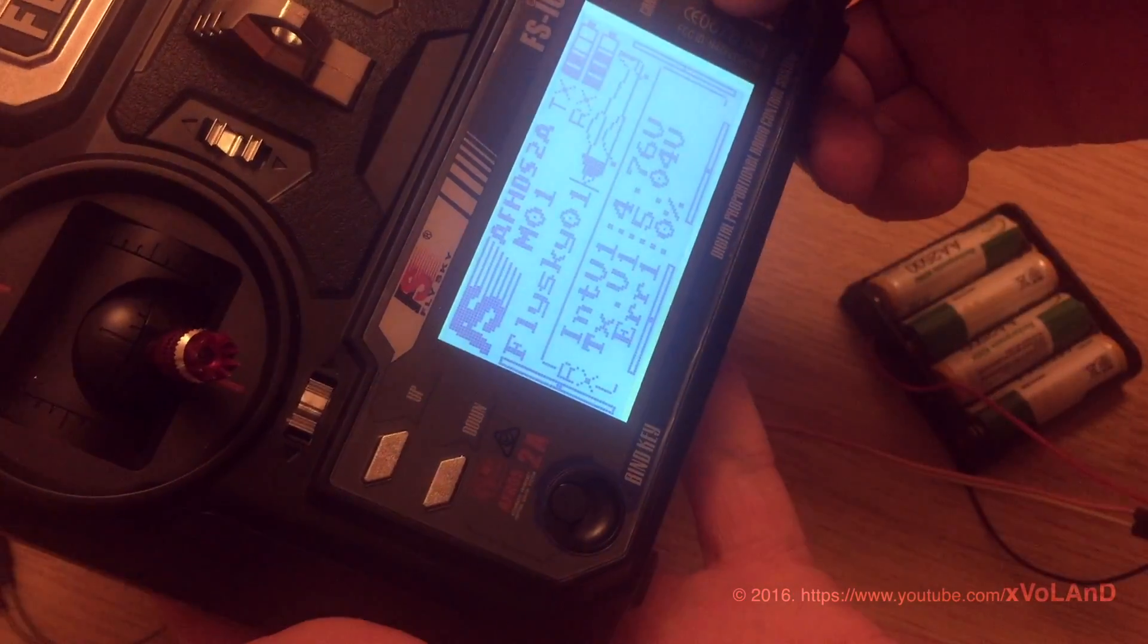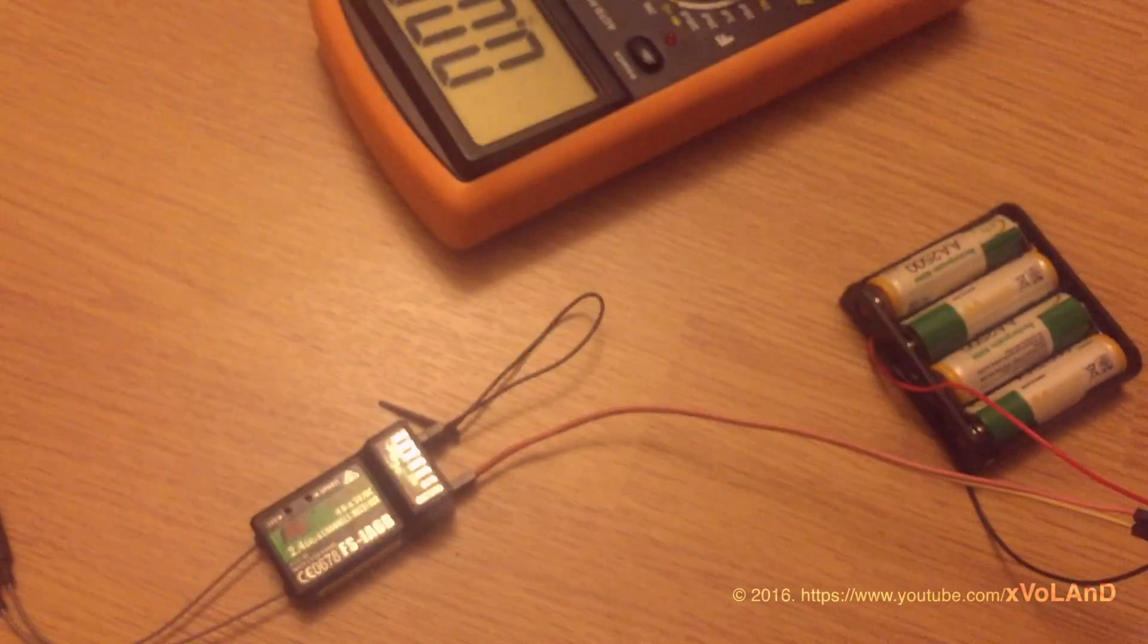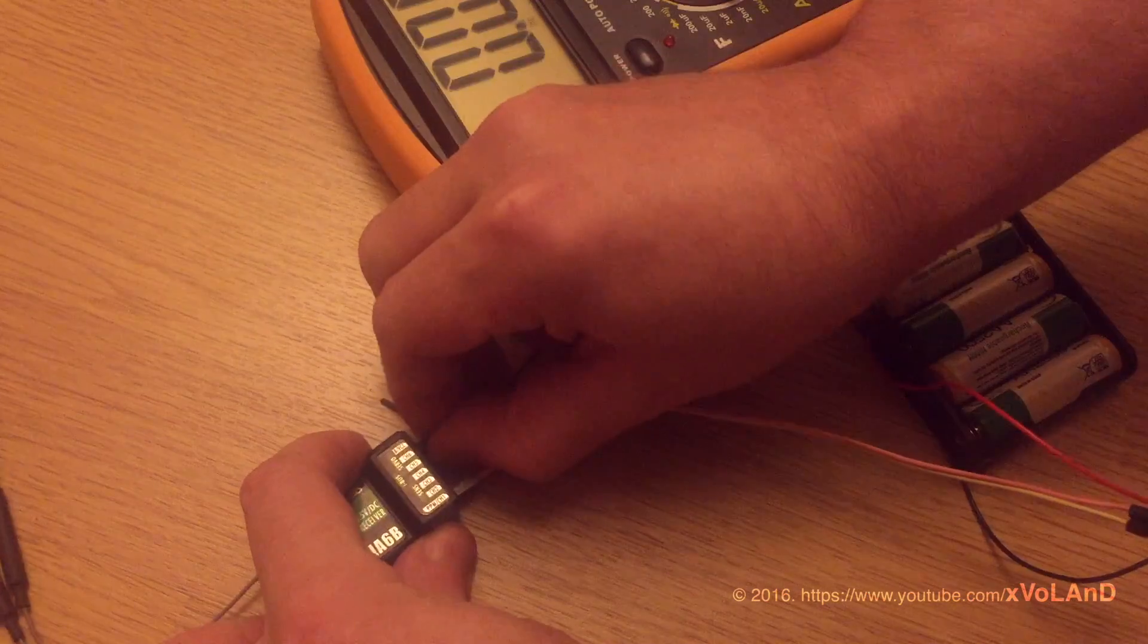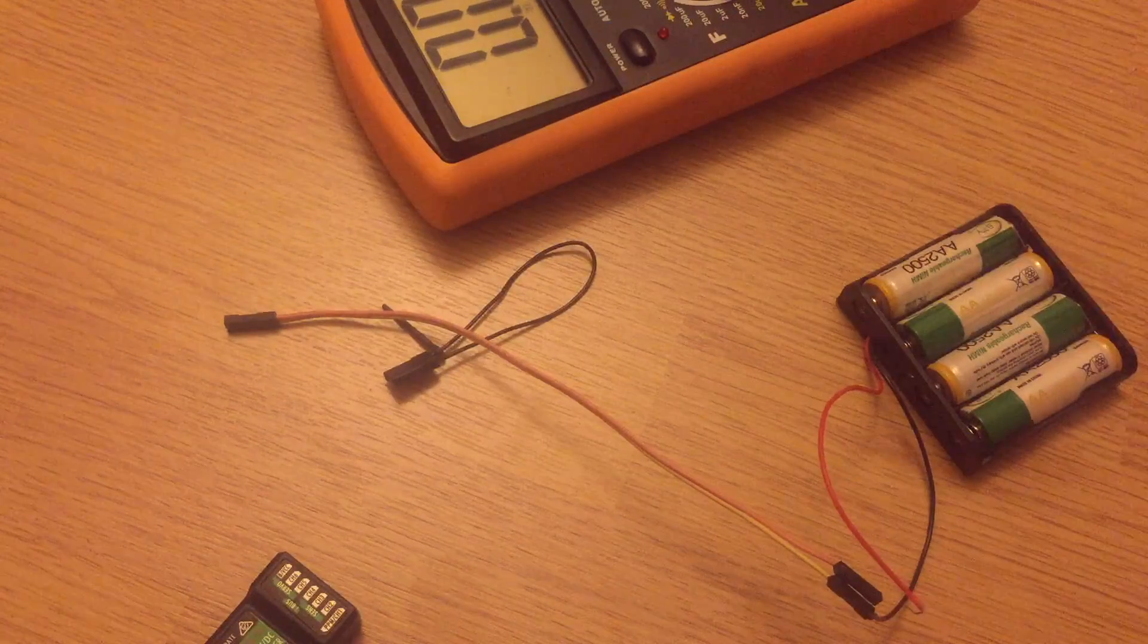That's all. Release the button on the transmitter, remove power from the receiver and turn off the transmitter. Remove the receiver binding plug, and you're done.